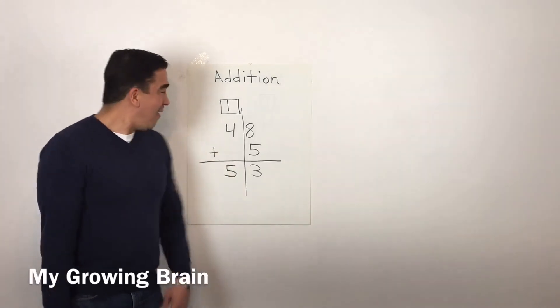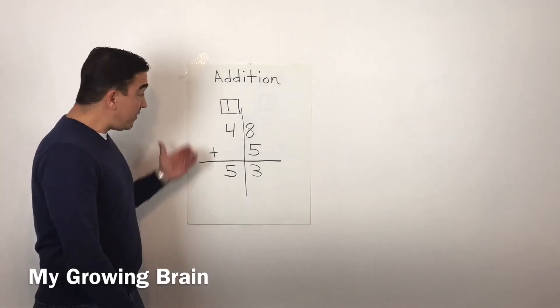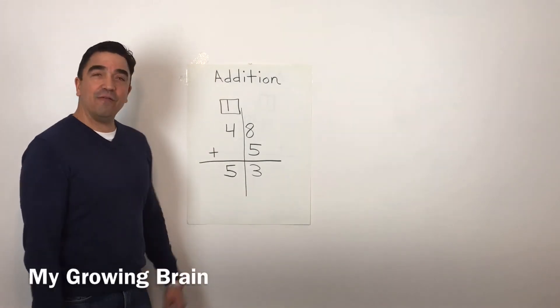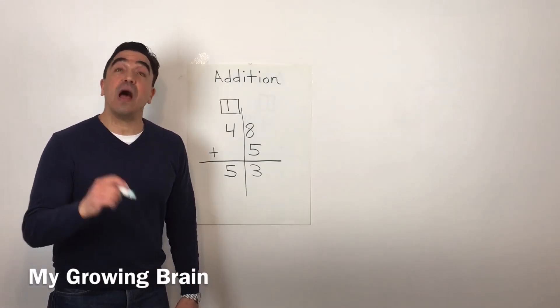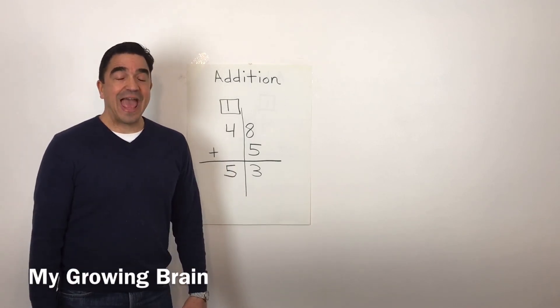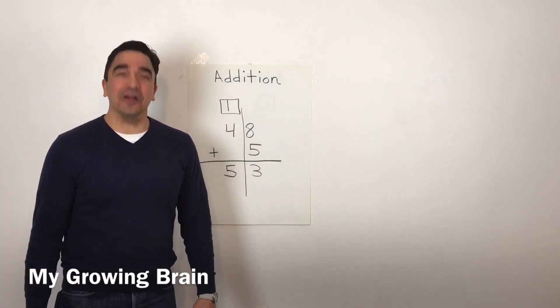So 48 plus 5 gives us a sum of 53. Don't forget, the sum is the answer to an addition problem. And that concludes our lesson.